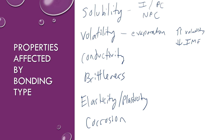Conductivity — we're typically looking at conductivity as a solid, molten, or dissolved in water. Metals tend to be conductive as solids, whereas ionic compounds are going to be conductive when they're molten or dissolved in water. Covalent compounds are typically not going to conduct electricity.